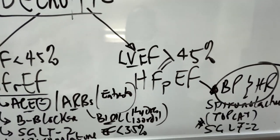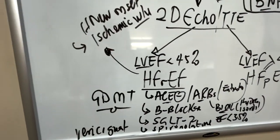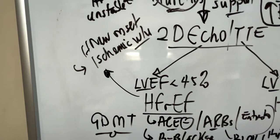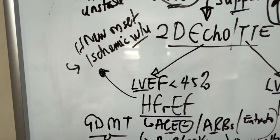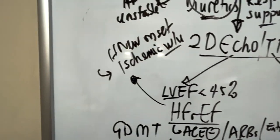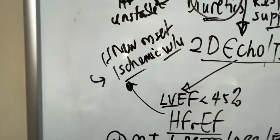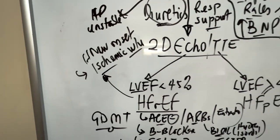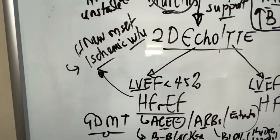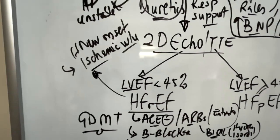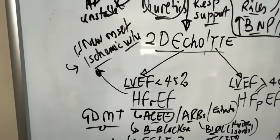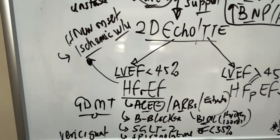Coming to heart failure with reduced ejection fraction, one of the first things you want to rule out, especially if this is new onset, is to make sure you do an ischemic workup to rule out acute coronary syndrome and coronary artery disease. If you're treating HFrEF and you're not taking care of that, a lot of times you're just spinning your wheels because you're not managing the underlying reason.